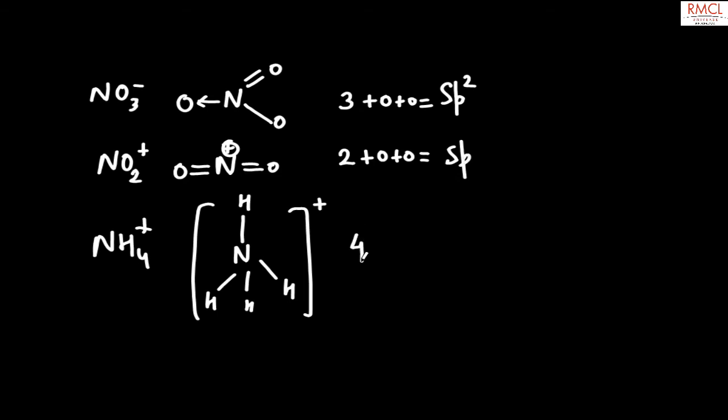For NH4+, four sigma bonds are present, zero lone pairs, and no unpaired electrons, giving sp3 hybridization. So the correct answer is sp2, then sp, then sp3. The correct option is B.